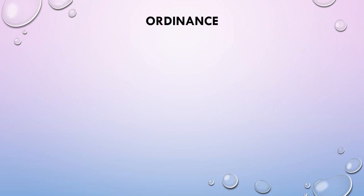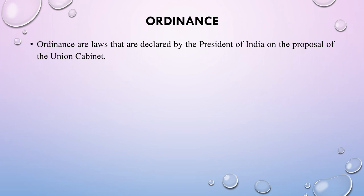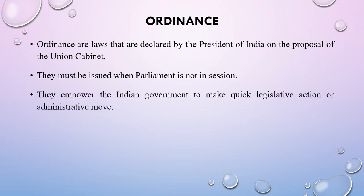The last topic is ordinance. It has been discussed earlier that it is necessary for any act to be passed by the parliament. But sometimes it may happen that parliament is not in session and it is necessary to implement a particular law. In that condition, ordinances are laws that are declared by the president of India on the proposal of the union cabinet. They must be issued when parliament is not in session, and they empower the Indian government to make quick legislative action.